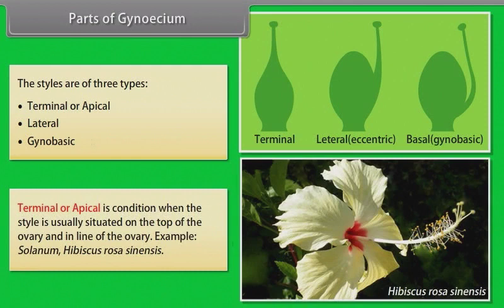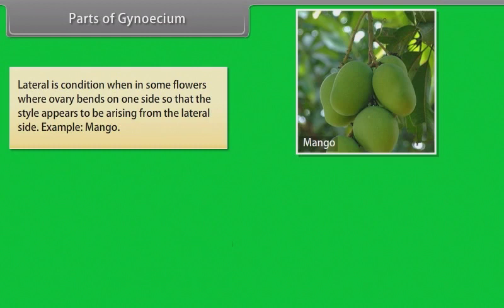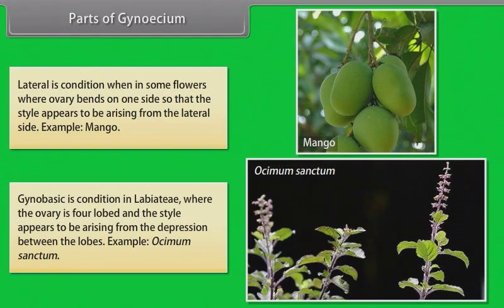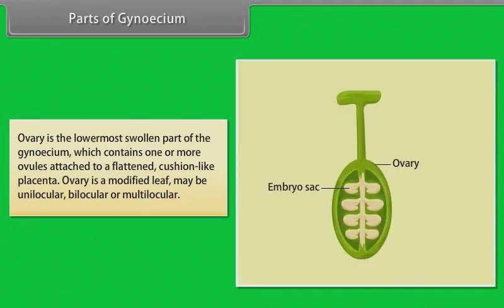Terminal or apical style is when the style is situated on the top of the ovary in line with the ovary, example Hibiscus rosa-sinensis. Lateral style is when the ovary bends on one side so the style appears to arise from the lateral side, example Mango. Gynobasic style is found in Labiatae where the ovary is four-lobed and the style appears to arise from the depression between the lobes, example Ocimum sanctum. The ovary is the lowermost swollen part of the gynoecium containing one or more ovules, attached to a flattened cushion-like placenta.